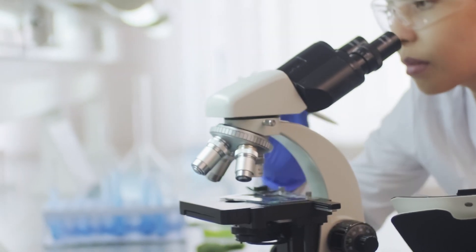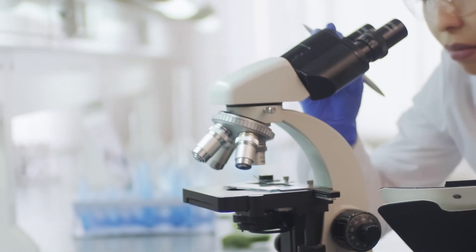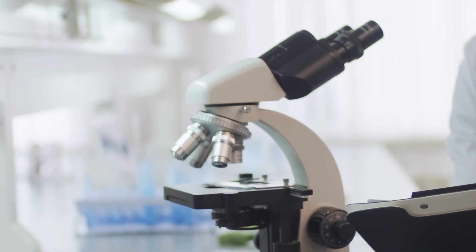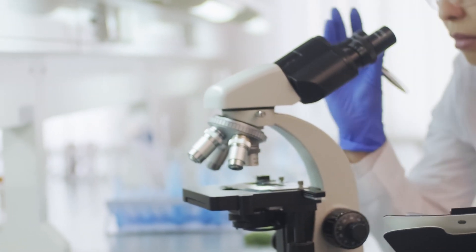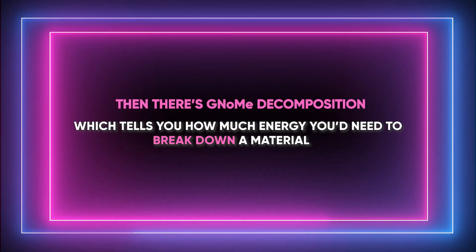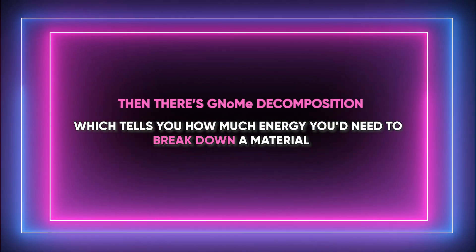The model's stability is like a fortune teller for materials. You give it a mix, like iron and oxygen, and it predicts whether they'll be BFFs. Then there's GNOME decomposition, which tells you how much energy you need to break down a material. Together, these models are like the Sherlock and Watson of material science.